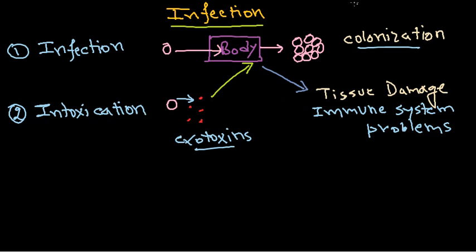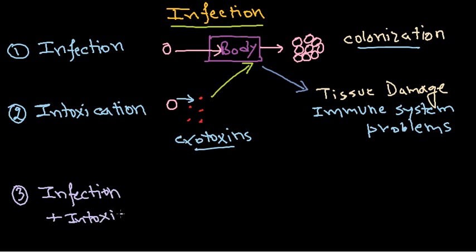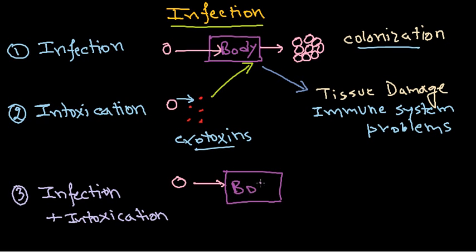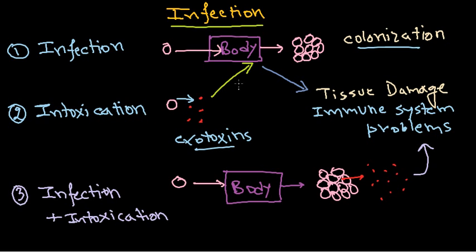The third kind involves a combinatory reaction of both infection and intoxication together. In this case, Staphylococcus enters the body and starts to colonize, while at the same time secreting exotoxins. These exotoxins further lead to effects like immune system problems and tissue damage. So these are the three different modes of infection caused by Staphylococcus species.